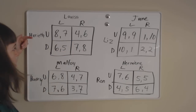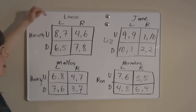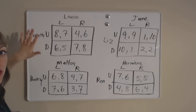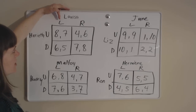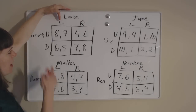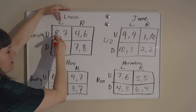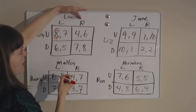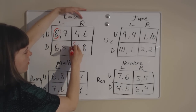Starting from Henrietta's perspective, we're going to think about what Henrietta's best response will be to each of Louisa's strategies. So if Louisa chooses left, Henrietta prefers the 8 over the 6. If Louisa goes right, then Henrietta prefers the 7 over the 4.